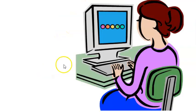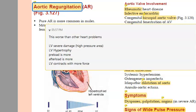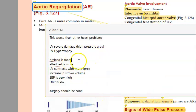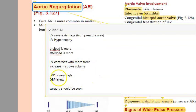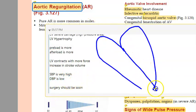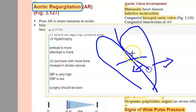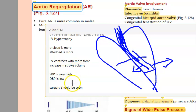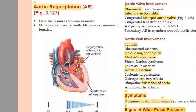The left ventricle is getting severely damaged. The load on the heart is more, so the left ventricle tries to contract with more force — there is an increase in stroke volume. The systolic blood pressure is very high and the diastolic blood pressure is very low, because during diastole, blood that was not supposed to come back is all coming back. That is what makes diastolic blood pressure low. These people have to be operated on soon.